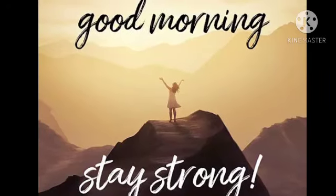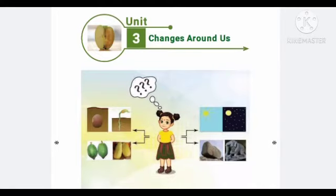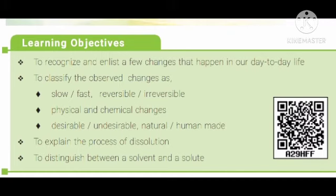Good morning children. Class 6, Science 1, Unit 3: Changes Around Us. Learning Objectives: 1. To recognize and enlist a few changes that happen in our day-to-day life. 2. To classify the observed changes as slow, fast, reversible and irreversible, physical and chemical, desirable and undesirable, and natural and human-made changes. 3. To explain the process of dissolution and to distinguish between a solvent and a solute.